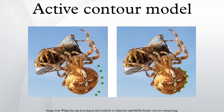Active contour model, also called snakes, is a framework in computer vision for delineating an object outline from a possibly noisy 2D image. The snakes model is popular in computer vision, and snakes are greatly used in applications like object tracking, shape recognition, segmentation, edge detection, and stereo matching.